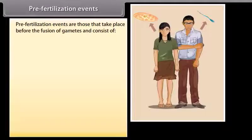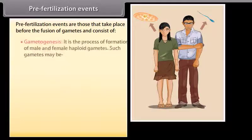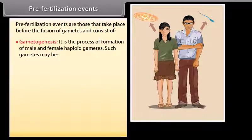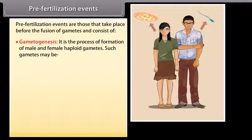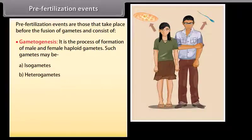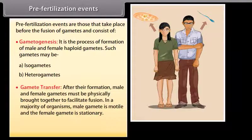Pre-fertilization events are those that take place before the fusion of gametes and consist of gametogenesis. Gametogenesis is the process of formation of male and female haploid gametes. Such gametes may be isogametes or heterogametes.